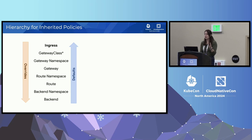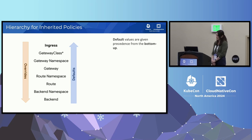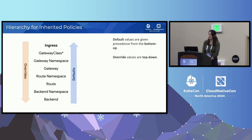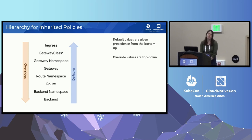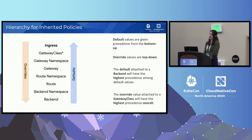What about inherited policies? Inherited policy affects objects in a hierarchy. There are two types of settings: defaults, which set defaults for something, and overrides, which set mandates, requirements, or constraints. Defaults are given precedence from the bottom up — if you apply a default to a gateway and a different default to a route, the route default wins because it's lower in the hierarchy. Overrides work the opposite way — precedence from the top down. So if you apply an override to the gateway and a different one to the route, the gateway override wins. This means a default attached to the backend has the highest precedence among defaults, whereas an override attached to the GatewayClass has the highest precedence overall, including over defaults.